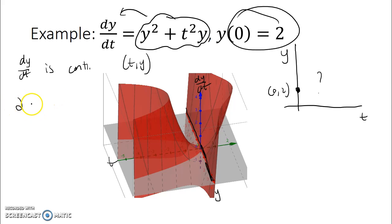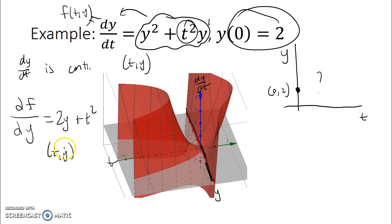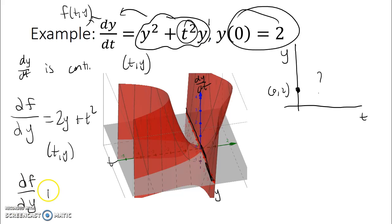Now I take the partial derivative — the partial of f with respect to y, since we can write dy/dt as f(t, y). The partial derivative is 2y plus t squared, because t squared is a constant with respect to y. Can I plug in any (t, y) pair? Certainly — I can multiply any number by 2, and square any number. So the partial of f with respect to y is also continuous everywhere.